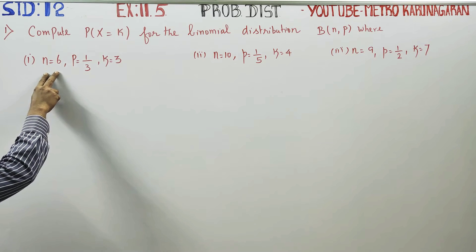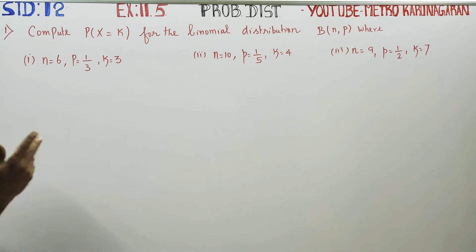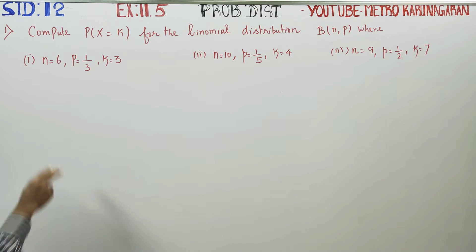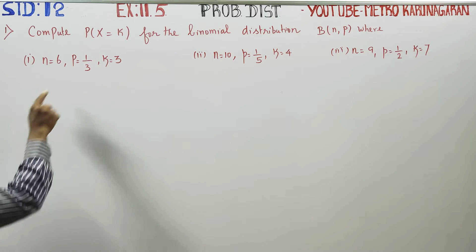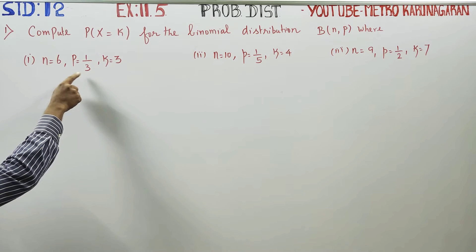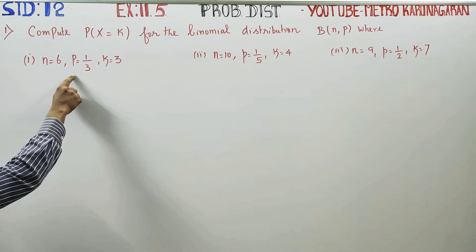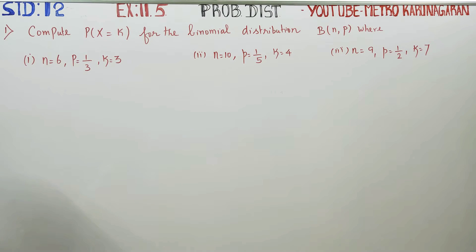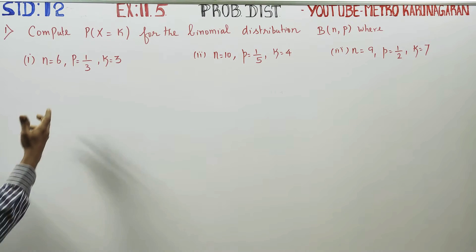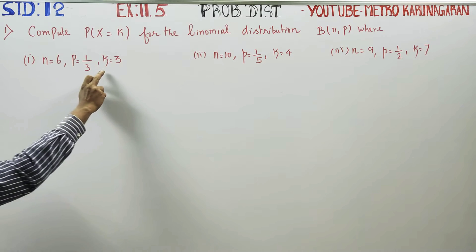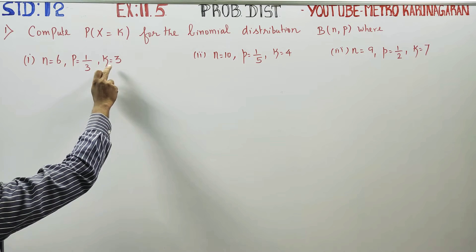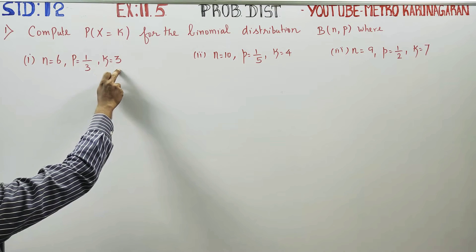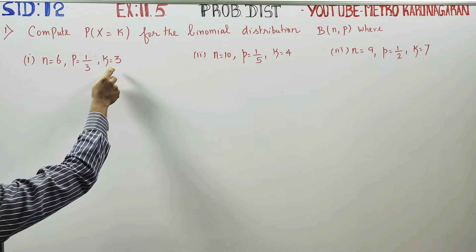n is the number of experiments to be done. P equal to 1/3 is the probability of success. k equal to 3 is the number of successes required.